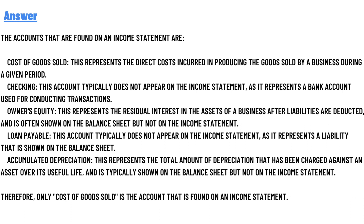Cost of goods sold is the correct answer. This represents the direct cost incurred in producing the goods sold by a business during a given period. Checking accounts typically do not appear on the income statement, as they represent bank accounts used for conducting transactions.